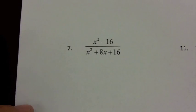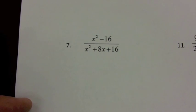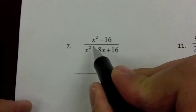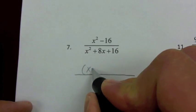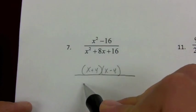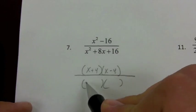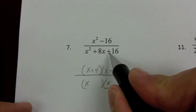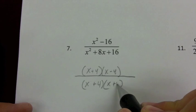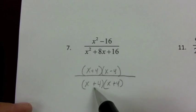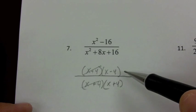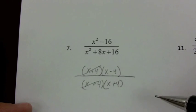Let's take a look now at question 7. I'm just asked to simplify this fraction, so I'm going to factor both the top and the bottom. The top is a difference of squares: x plus 4 times x minus 4. For the bottom, I have x and x, looks like plus and plus — multiply to give me 16 and add to give me 8, that's 4 and 4. So we have a common factor of x plus 4 that divides out, and our final simplified answer is x minus 4 over x plus 4.